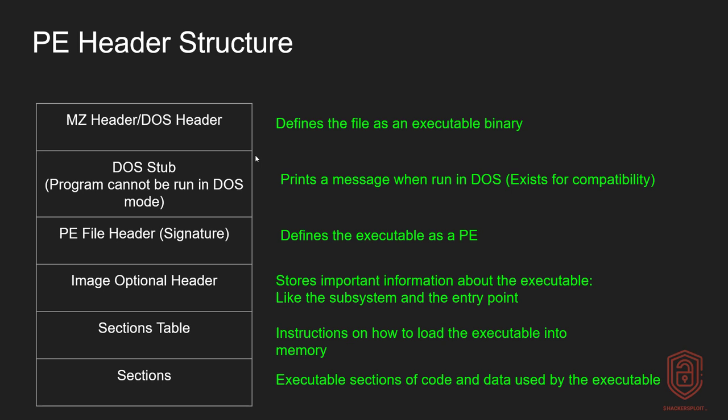Secondly, is the DOS stub. The DOS stub exists primarily for compatibility. Its job is to essentially print out the message, "This program cannot be run in DOS mode." We took a look at that when we were analyzing the portable executable and its strings. Next, let's take a look at the PE file header, which essentially contains the signature as the most important piece of information. These following sections are now where we can find most of the important information — it defines the executable as a portable executable, providing context into what executable we're dealing with.